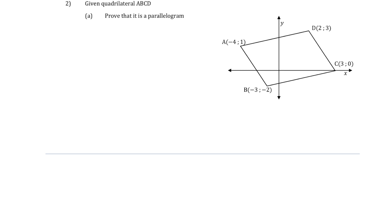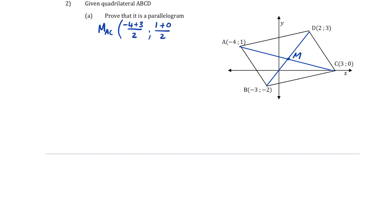The easiest method by far is to show that the two diagonals bisect each other. In analytical geometry, the tool for bisection is the midpoint formula. Looking at the midpoint of diagonal AC: we take the x-values, negative 4 plus 3, divided by 2; and the y-values, 1 plus 0, divided by 2.